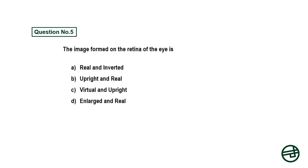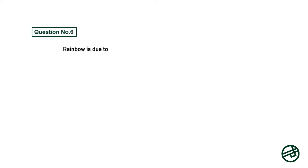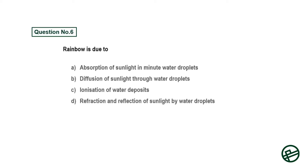Question number five: The image formed on the retina of the eye is — option A: real and inverted, option B: upright and real, option C: virtual and upright, option D: enlarged and real. Answer is option A: real and inverted.